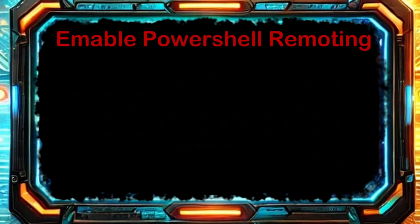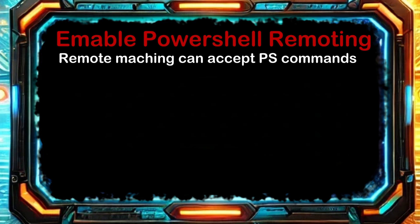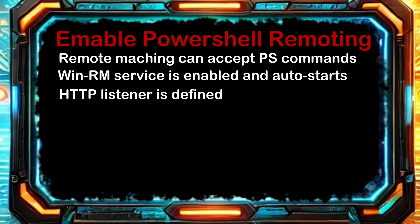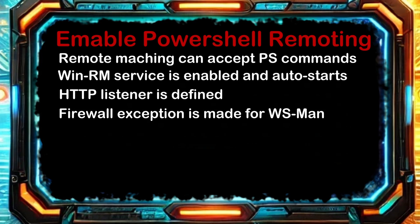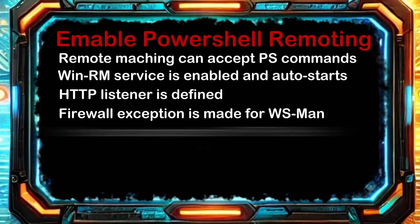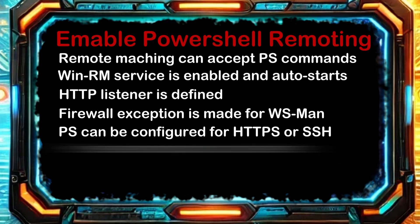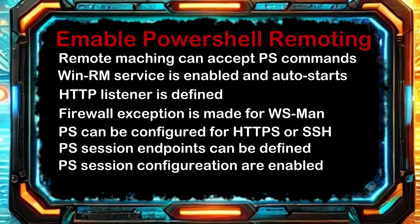When enabling PowerShell remoting, a few things happen. First, the remote machine gains the ability to receive PowerShell commands. The Windows Remote Management service is enabled and set to auto-start. An HTTP listener is defined on the remote machine along with a Windows Defender firewall exception for the WS-MAN protocol. Note that the listener uses HTTP, so commands aren't encrypted using TLS, but PowerShell remoting is encrypted by default using other means. It can also be configured to use HTTPS or SSH for encryption.